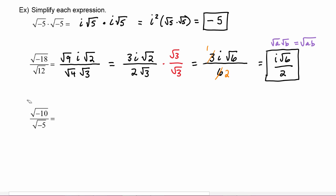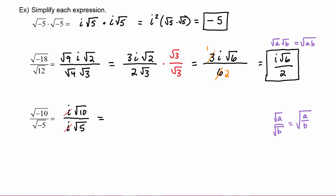In this next expression we have radical negative ten over radical negative five. The numerator is i radical ten, and the denominator is i radical five. The i in the numerator cancels with the i in the denominator. Then, using the rule from algebra that radical a divided by radical b equals radical of a over b, radical ten over radical five becomes radical ten-fifths, which is radical two.